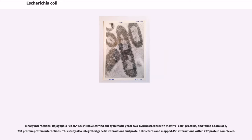Regarding binary interactions, Rajagopala et al. carried out systematic yeast two-hybrid screens with most E. coli proteins and found a total of 2,234 protein-protein interactions. This study also integrated genetic interactions and protein structures and mapped 458 interactions within 227 protein complexes.